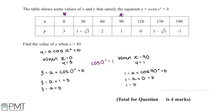We substitute the value b equals 1 into the equation 3 equals a plus b, giving us 3 equals a plus 1. Subtracting 1 from both sides tells us that a equals 2.